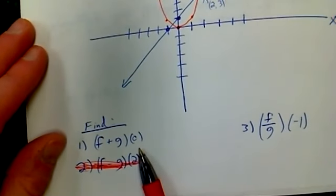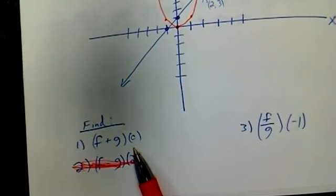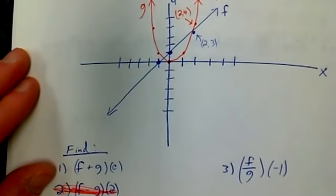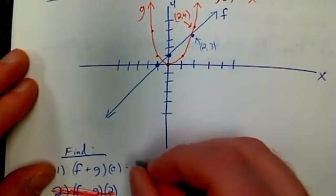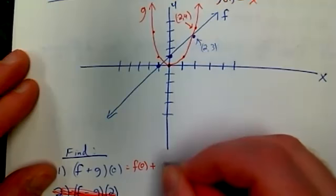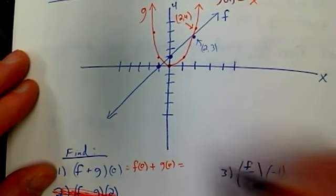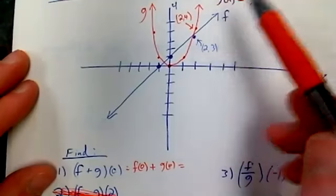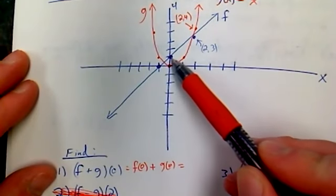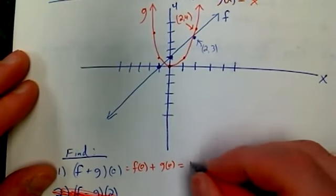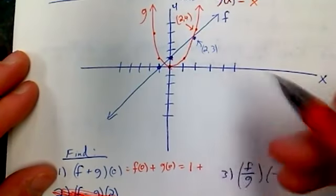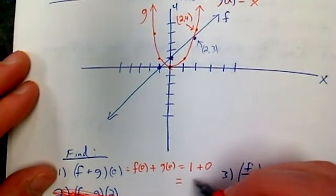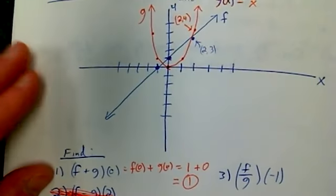But let's look at this. f plus g of 0. So let's pretend we don't know what f and g are, and we just have the graphs. So that's f(0) plus g(0), which is going to be, let's see, f is the blue one, so f(0) is 1. g(0) looks like is 0, so it looks like that composition is just 1.